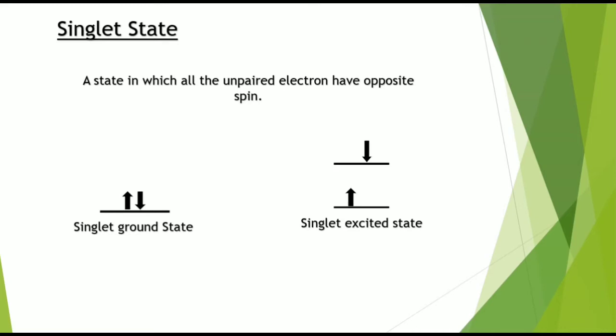Here, the unpaired electron in the ground state has the upward spin as that of the unpaired electron in the excited state. Thus, it is also known as the singlet excited state.